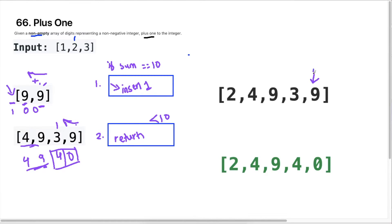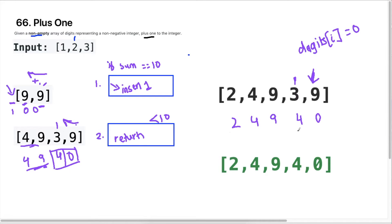Our strategy is to start at the last element. If we're given this list, we're going to add one to nine, and that sum equals 10. So what we do is replace this digit with a zero — digits at that position is equal to zero — because we know we're going to carry one. Then we add that one to the three, and that's four, which is less than 10. So we can return the rest of the items in place. We're doing an in-place change here, and this is the answer. We're returning prematurely — it will become clearer when we write the code.